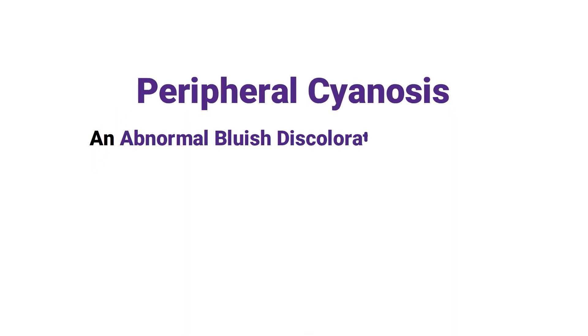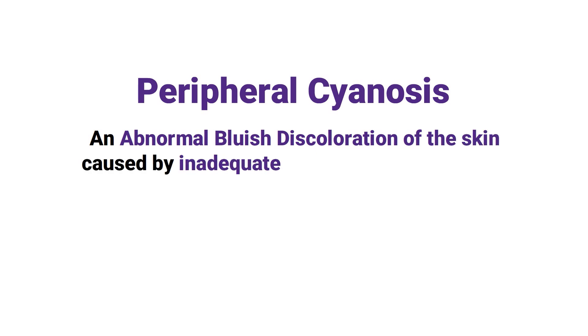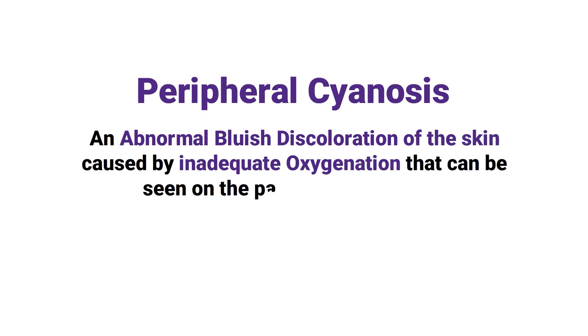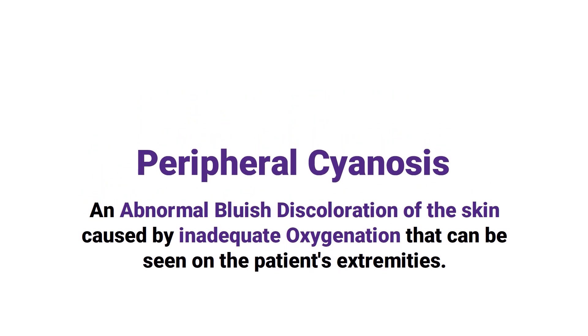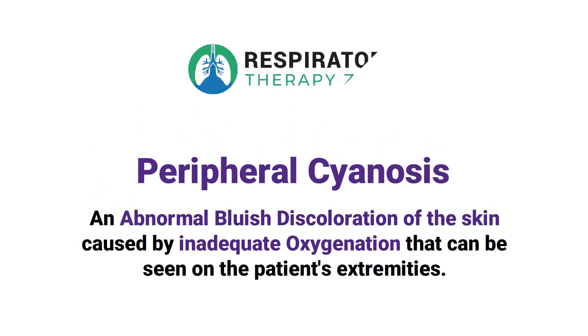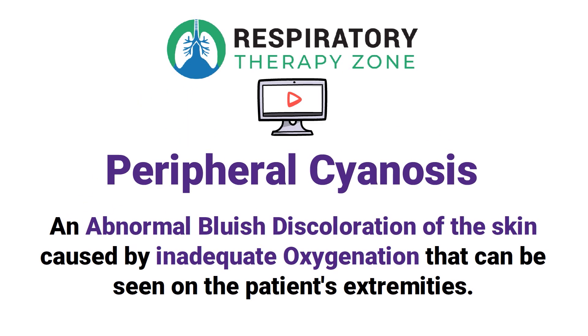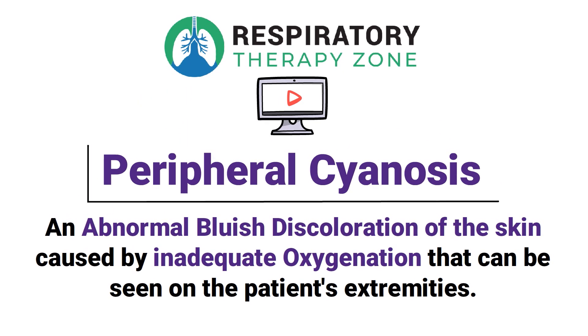Peripheral cyanosis is an abnormal bluish discoloration of the skin caused by inadequate oxygenation that can be seen on the patient's extremities. We created this video to cover the medical definition and provide a brief overview of this topic, so if you're ready, let's get into it.